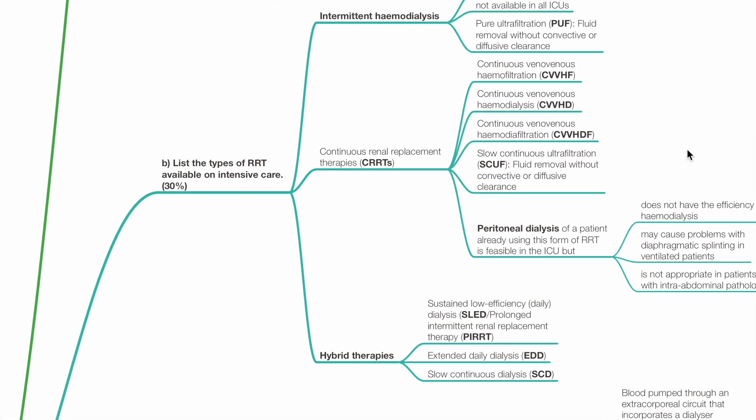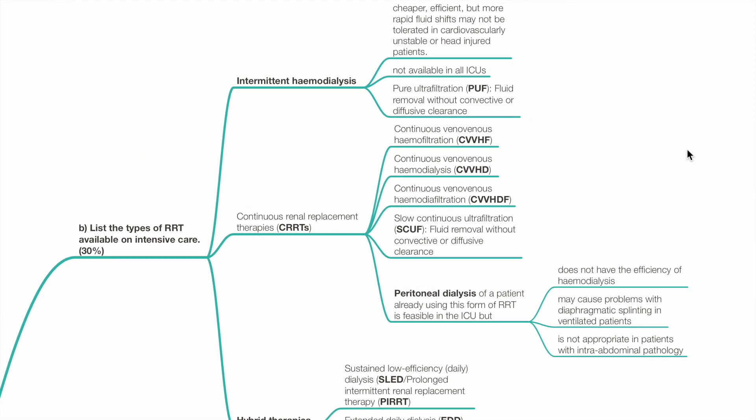List the types of RRT available in intensive care. This includes intermittent hemodialysis, continuous renal replacement therapies and hybrid therapies.